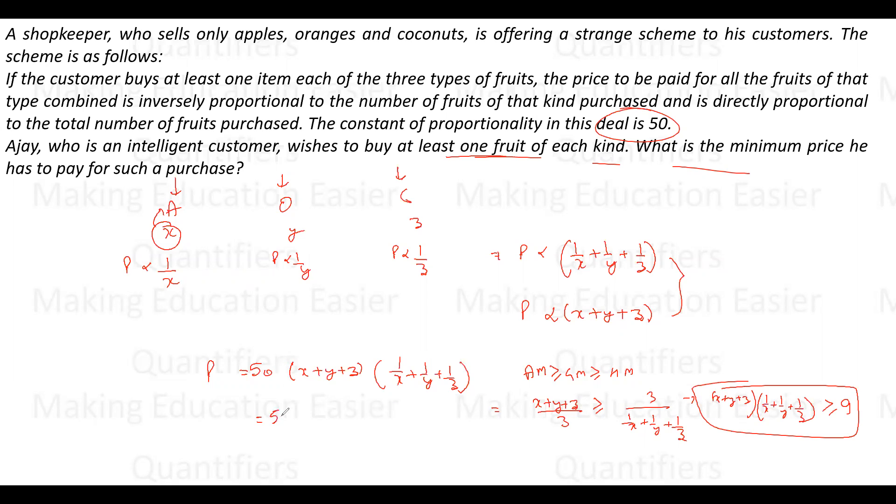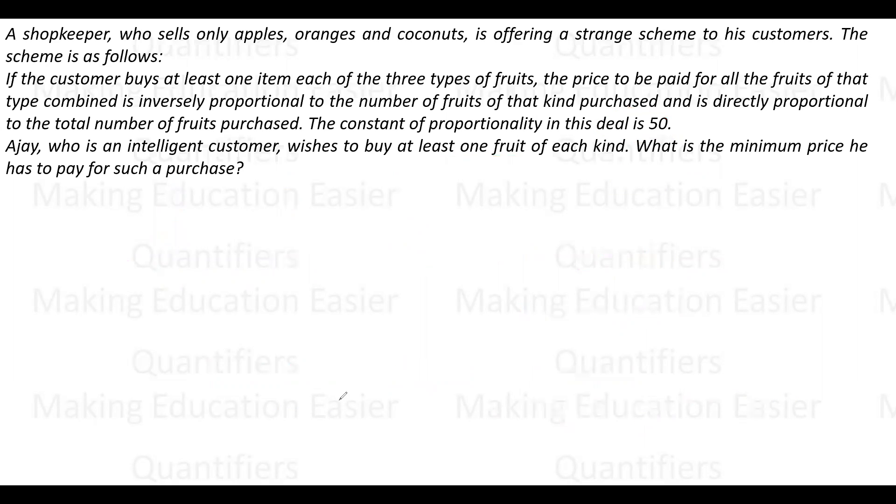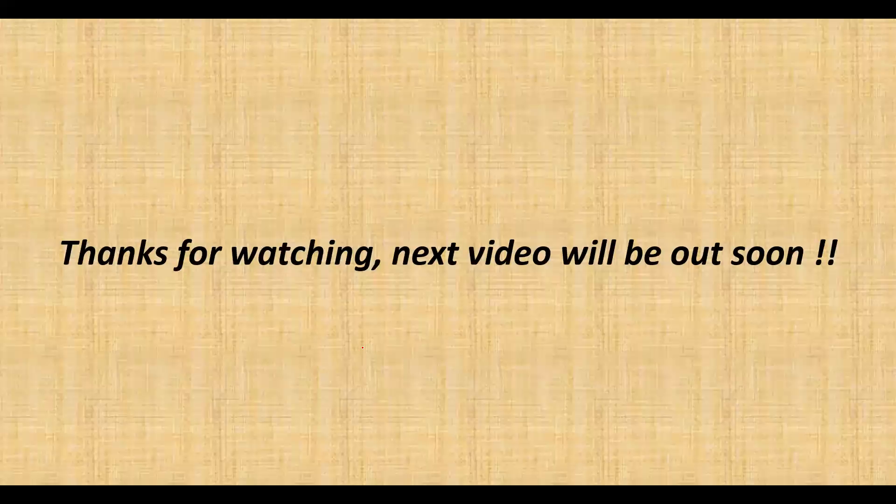The minimum cost he has to pay is 50 × 9 = 450. So 450 is the minimum cost, and this is our required result. I hope you understood the explanation. If you did, please subscribe to our channel. We'll return with a new video very shortly. Thank you so much, guys. Have a great day!